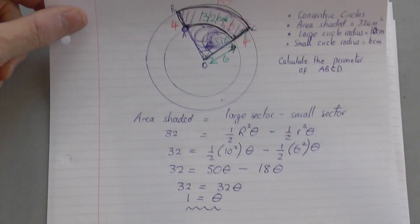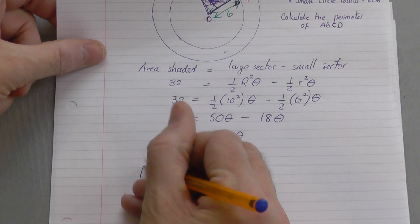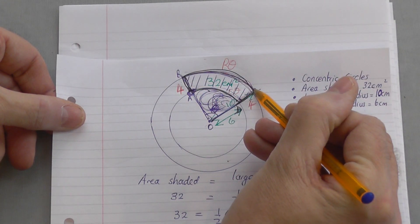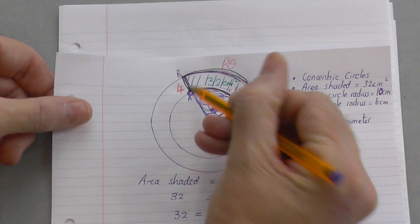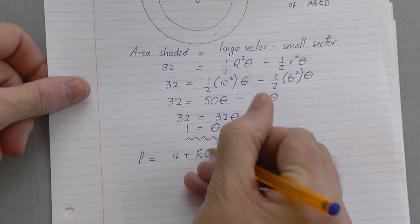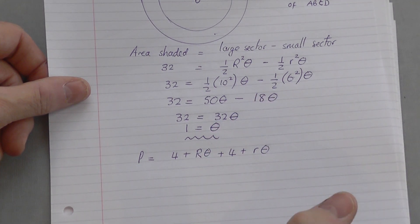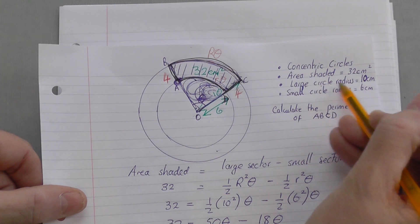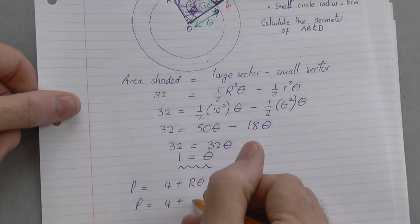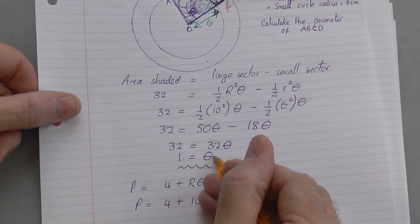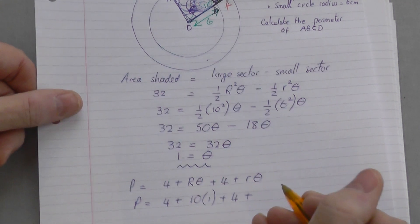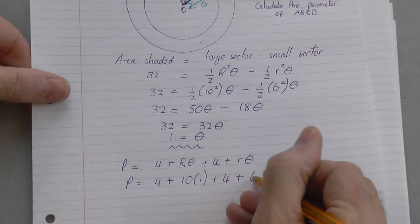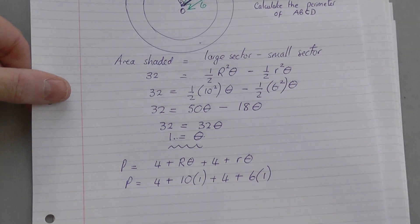The perimeter will be 4 plus big r theta plus another 4 plus little r theta. So the perimeter will be 4 plus, big r was 10, so we've got 10 times theta. Well theta we just found that, so that's 1, plus 4 plus little r. The small radius was 6, so 6 times theta, same angle theta, 1 radian.